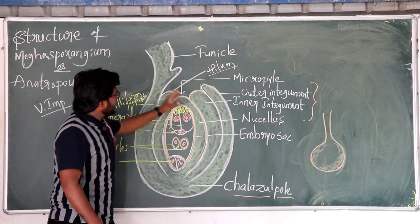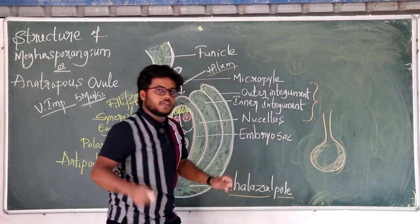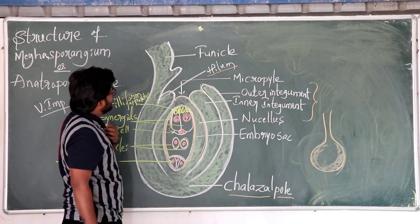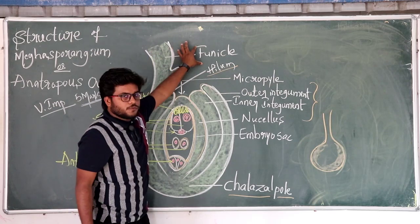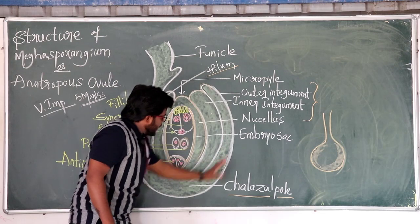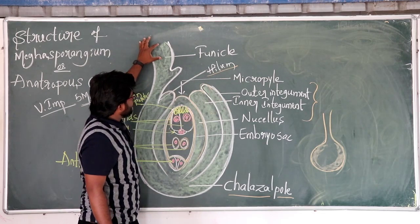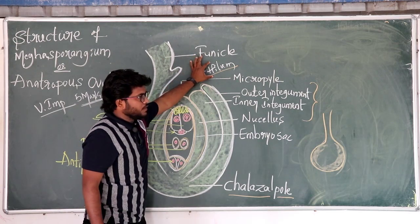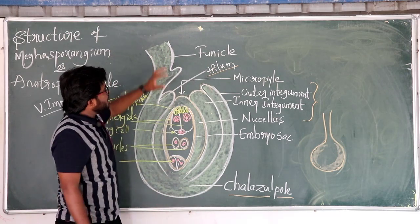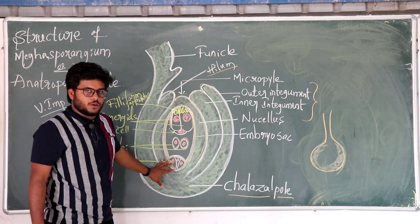This Ovule is attached to the placenta inside the ovary with the help of a small structure called as the funicle. The body of the Ovule is attached to the funicle with the help of the structure called as the hilum. Hence, this hilum acts as the junction between funicle and the Ovule.